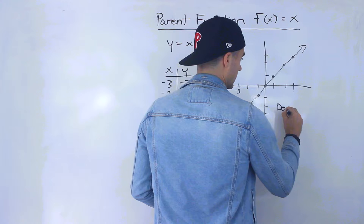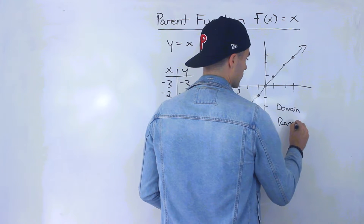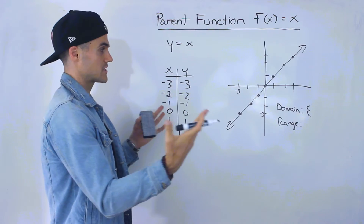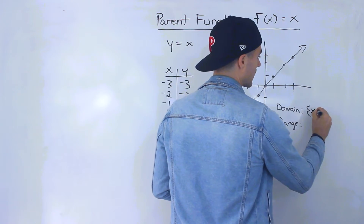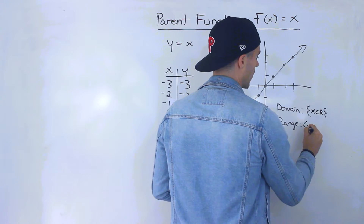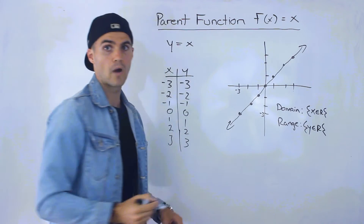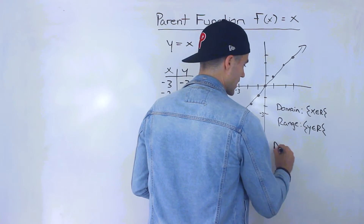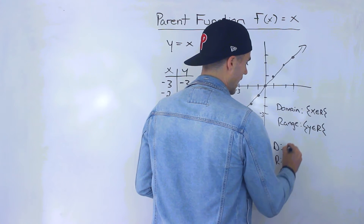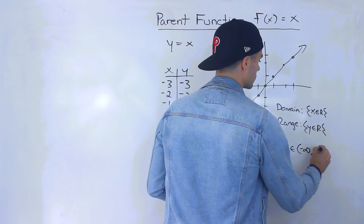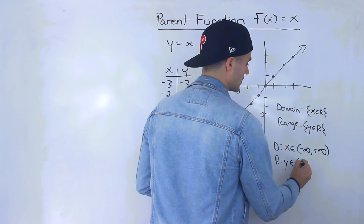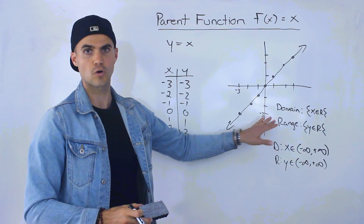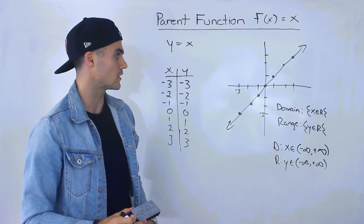Now, what is the domain and range of this parent function? The domain — notice that there's no limit on the x values. They can be anything from negative infinity to positive infinity, so we write x ∈ ℝ. Same thing with the y values — there's no limit. Another notation: x is an element from negative infinity to positive infinity, and y is an element from negative infinity to positive infinity.